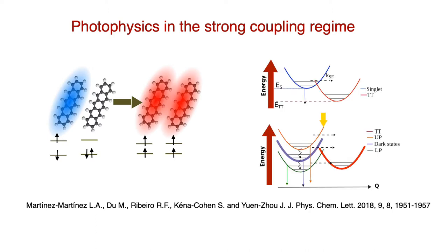And we developed a kinetic model to explain how the efficiencies change upon the formation of the so-called dark and polarity modes. And we found out that under certain conditions you can actually increase the efficiency of triple generation for single efficient materials in the strong coupling regime. So this gave us the motivation to explore the emerging photophysics in related phenomena.